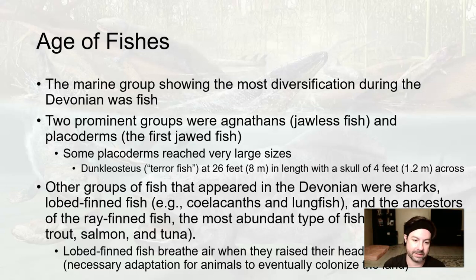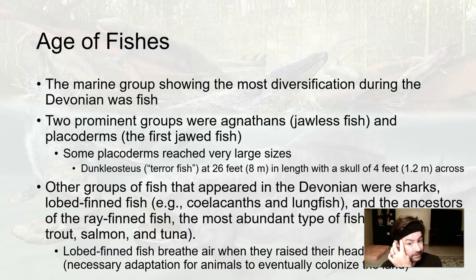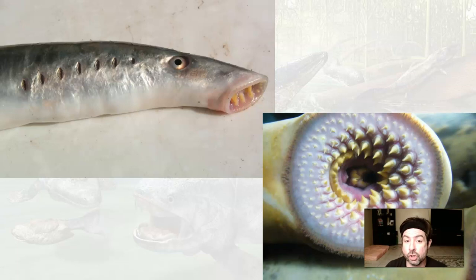Going back to the lobed-finned fish: lobed-finned fish breathe air when they raise their head above the water, which was a necessary adaptation for animals to eventually make their way onto land. That's why these lobed-finned fish are one key step in the evolutionary process of getting life onto land. This is a modern jawless fish — a lamprey — and it looks archaic, like something from another world.